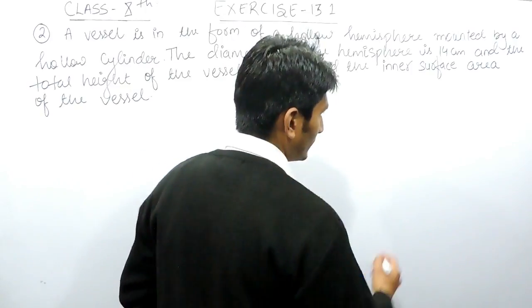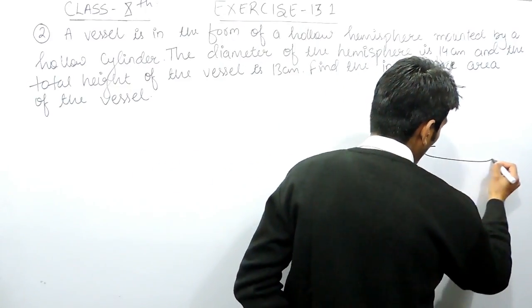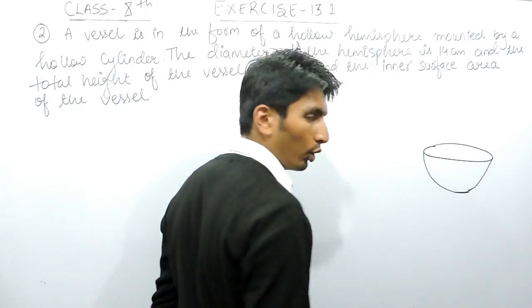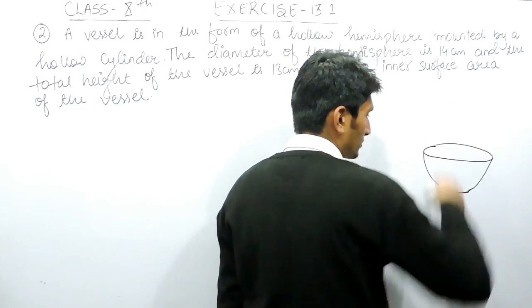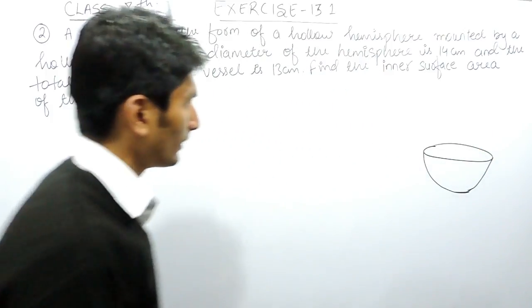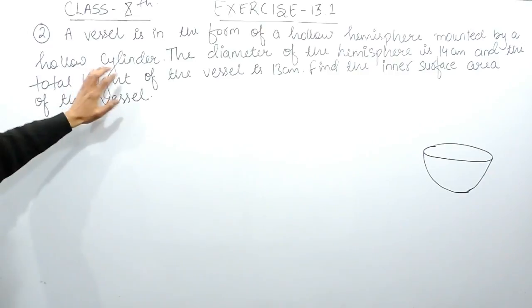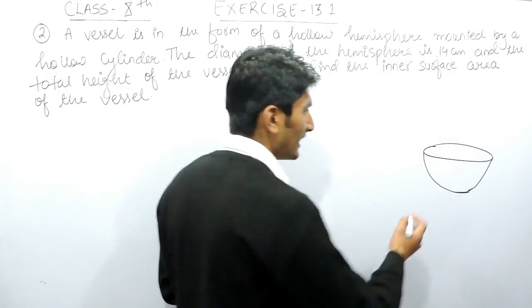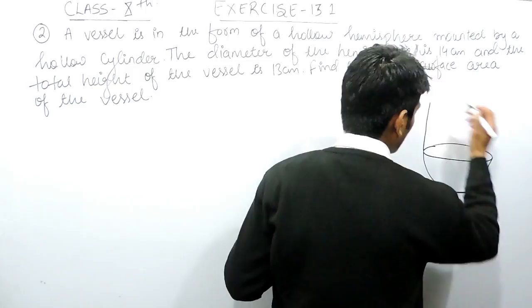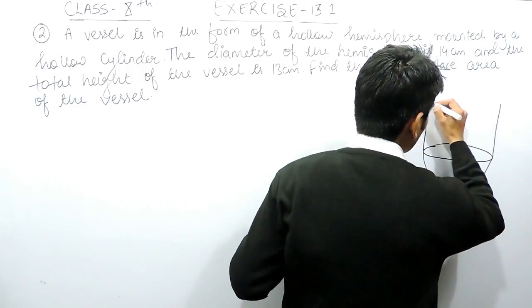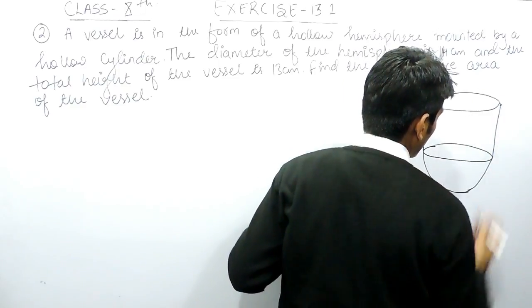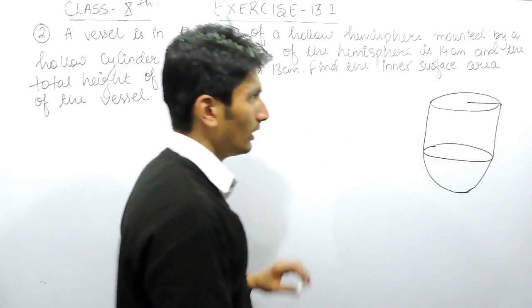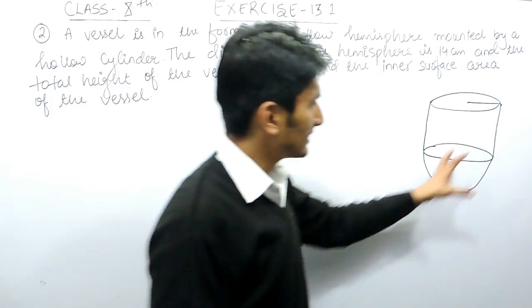First of all there is a hollow hemisphere — this is a hemisphere and it is hollow, meaning the inside of this hemisphere is empty. This is mounted by a hollow cylinder, meaning a cylinder is placed on the top of this hemisphere, and the cylinder is also hollow. This is a complete vessel with a hemisphere mounted with a cylinder.